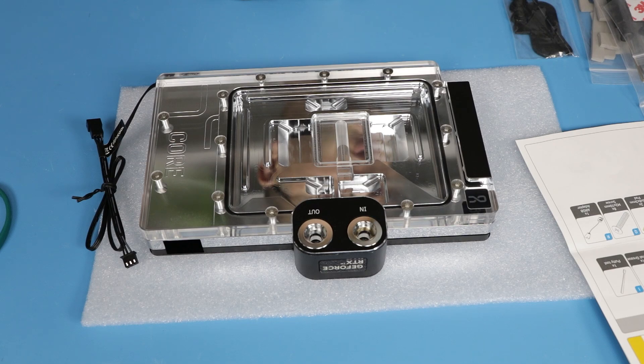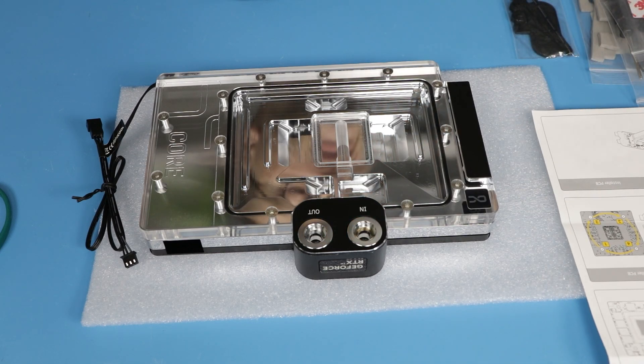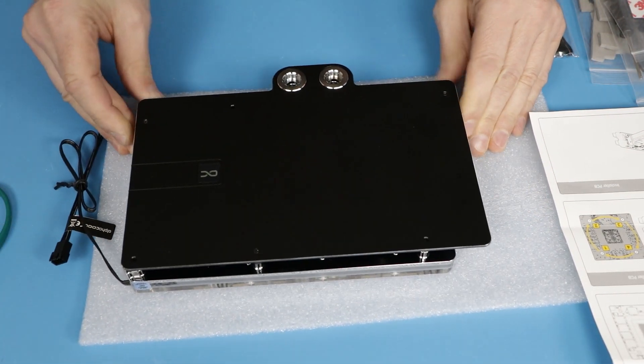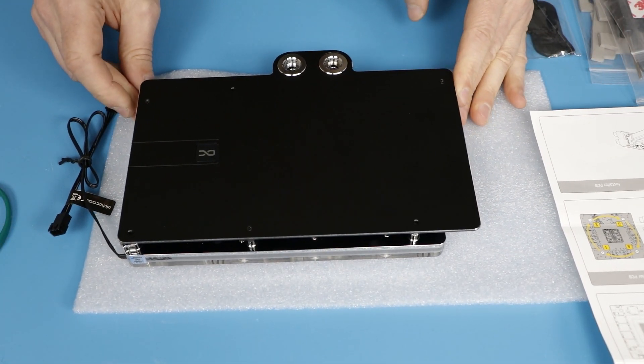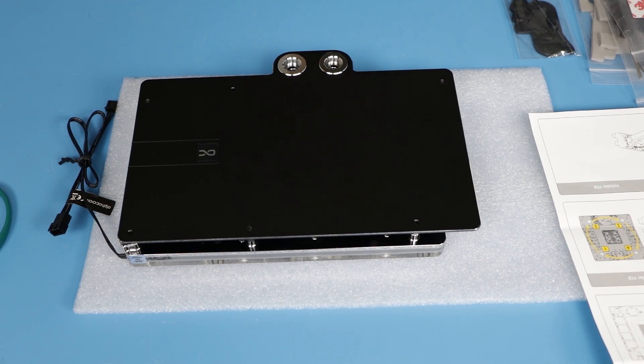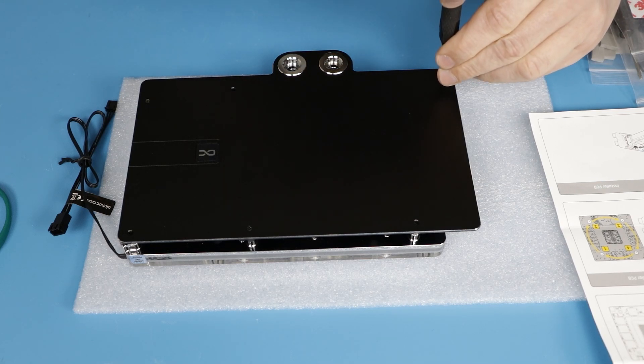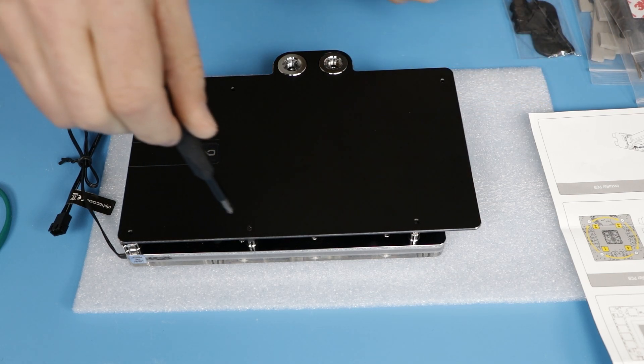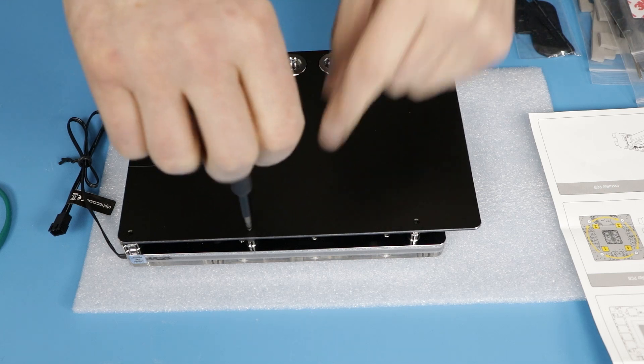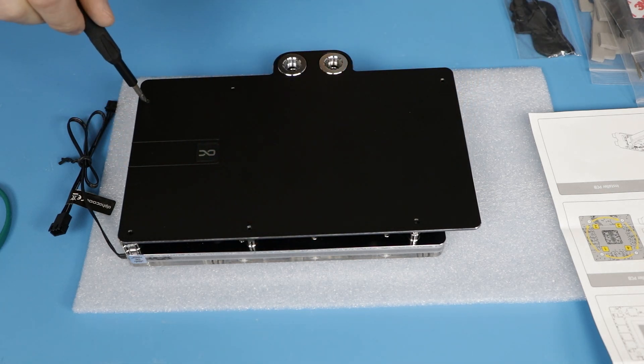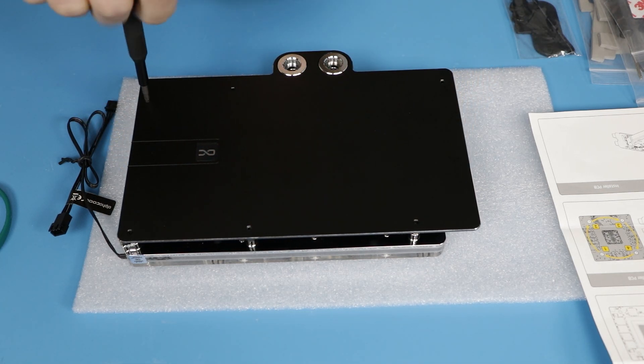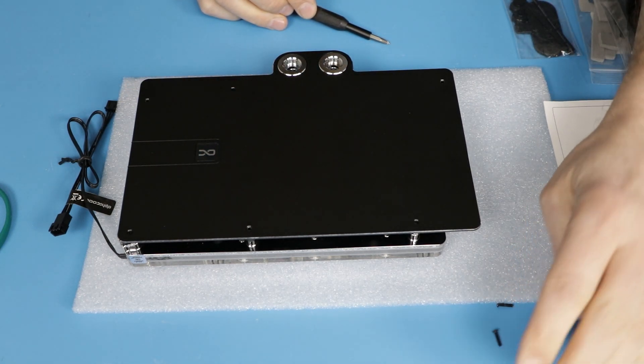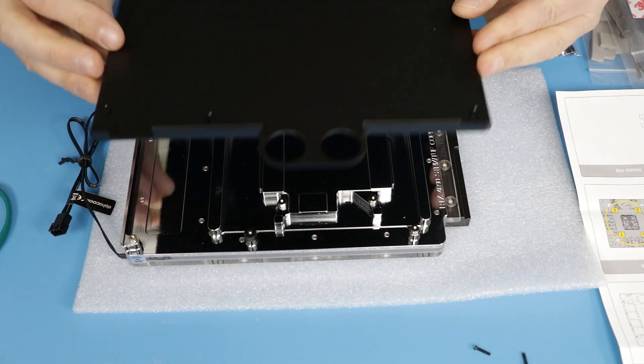Let's start working on the block. The first step is actually the same as with EK. We have a block and its backplate somewhat pre-assembled together so they can be shipped in a more safer way. First step you do is you remove the backplate by unscrewing a couple screws. It's not an active backplate, so it's just a piece of aluminum. Let's see what's inside.